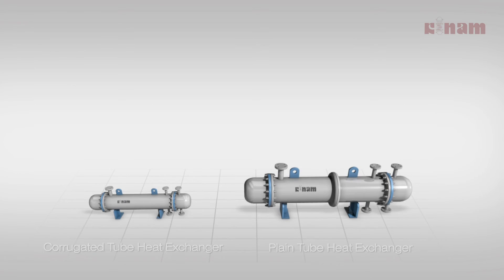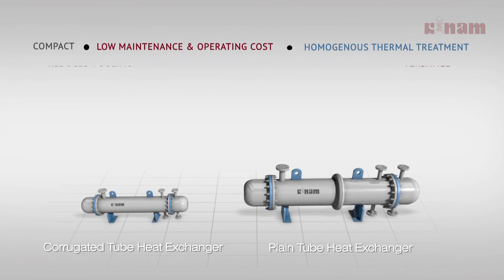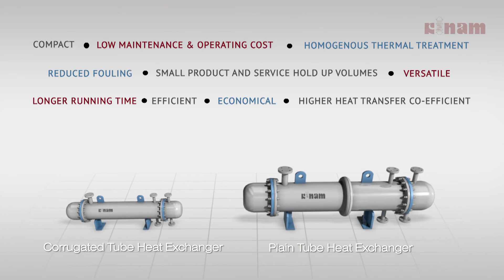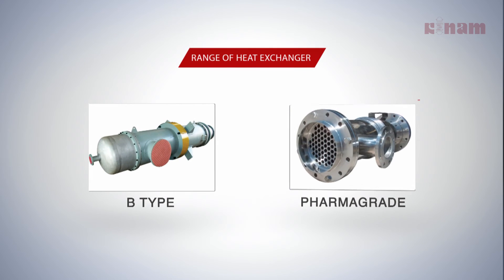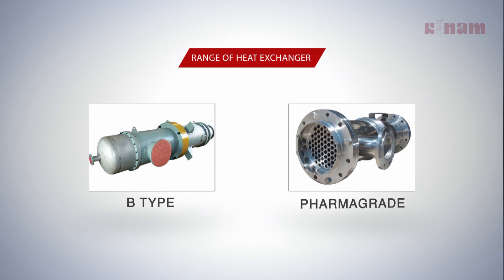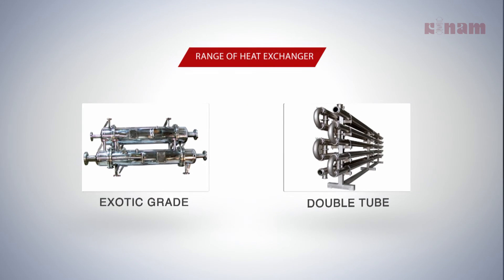The corrugated tube heat exchangers are compact, economical in cost, efficient and versatile with reduced fouling. The X-tube range comprises of B-type, pharma-grade, exotic and double tube.